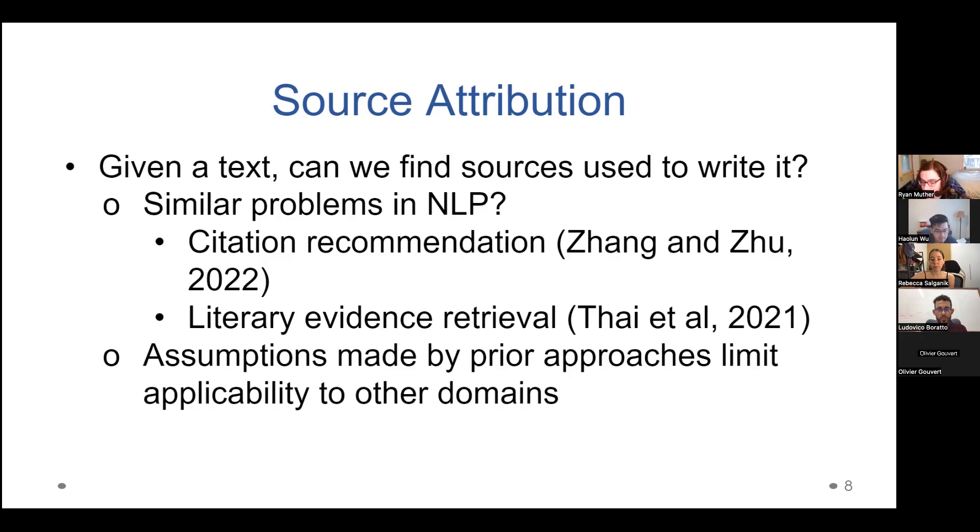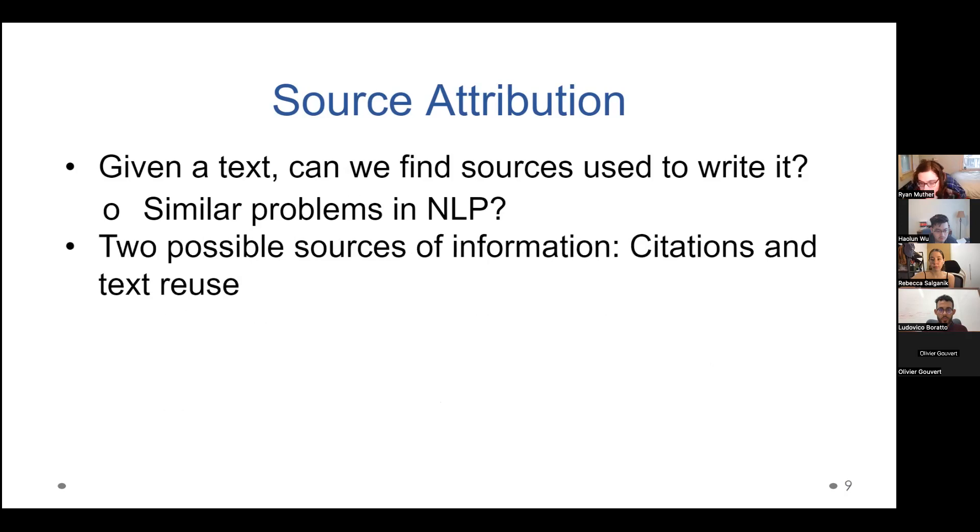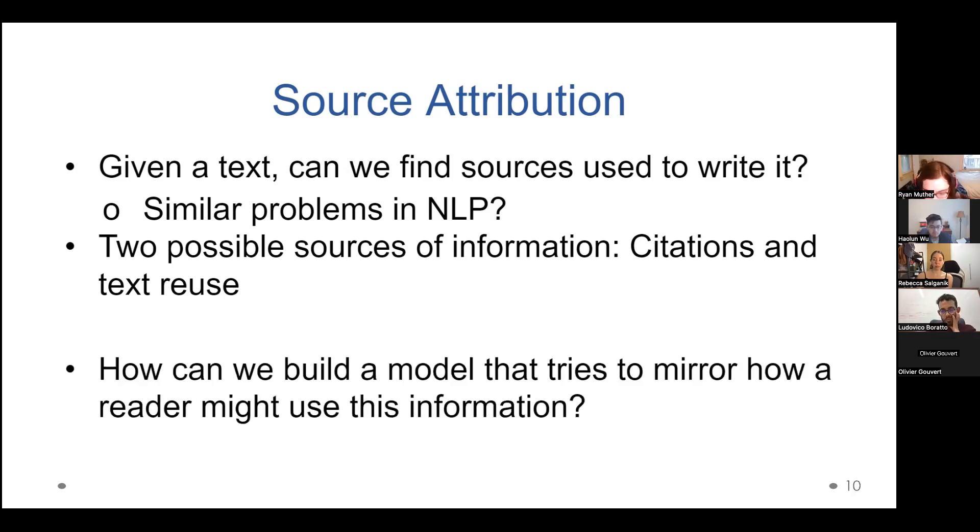So what I want to do is see can we relax some of those assumptions and learn anything both about what kinds of problems these are actually more useful for, if you broaden the definition a little, and what can these models actually learn? So to think about this problem, kind of broad strokes, there are sort of two forms of information if you're looking at a text that we can think about, which is the kind of explicit information from citations, where the author will explicitly tell you, here is the source I am using, and here's how you can go find it. And then you have text reuse, which is where the author, either with or without attribution, has gone and taken some material from somewhere else, and you can go, hey, hang on a minute, this text here looks a lot like this text here, maybe there's a relationship. So how do we kind of build a model that tries to mirror how a reader might use this information?